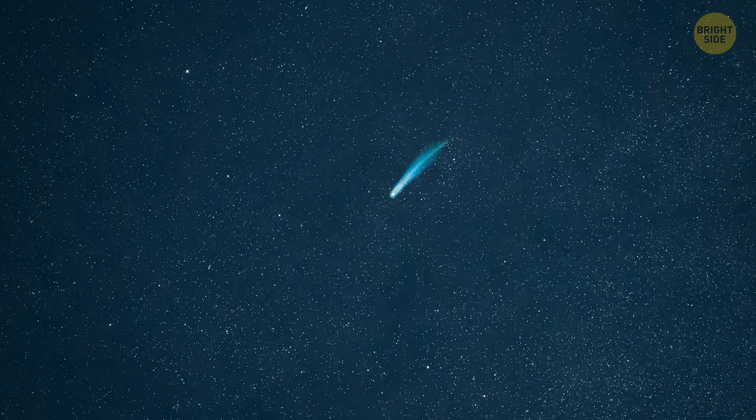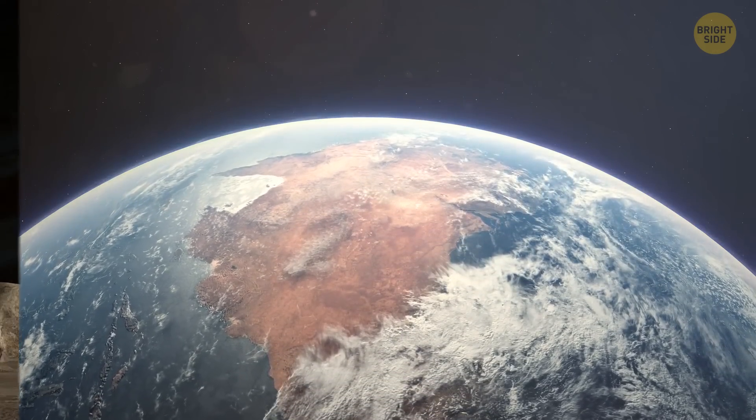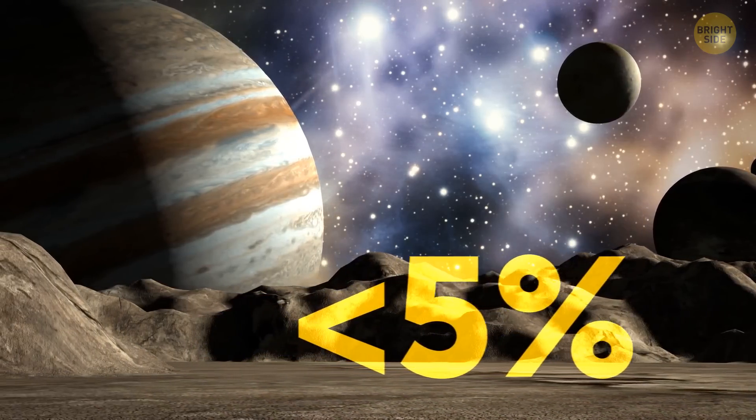Galaxies, planets, comets, asteroids, stars, space bodies are things we can actually see in space. But they make up less than 5% of the total universe.